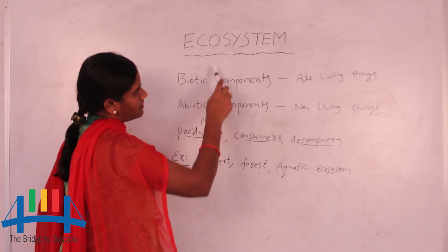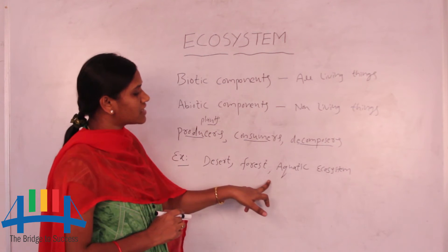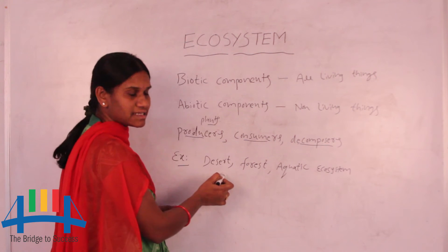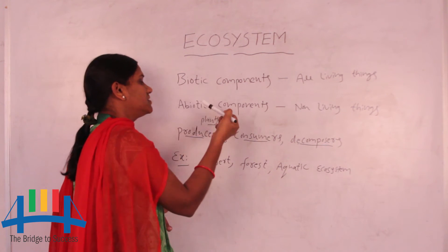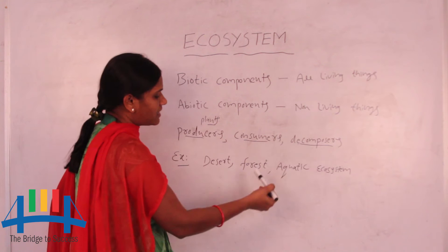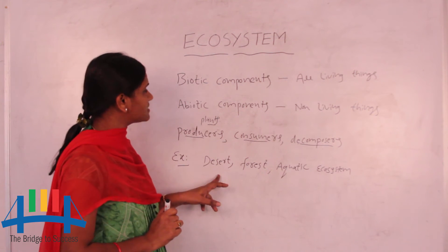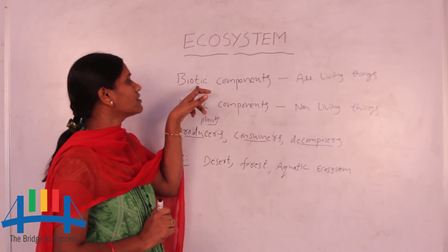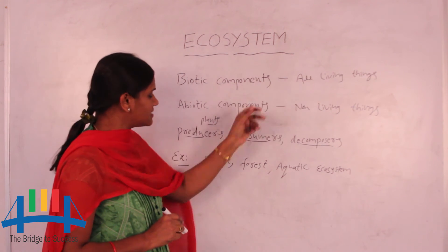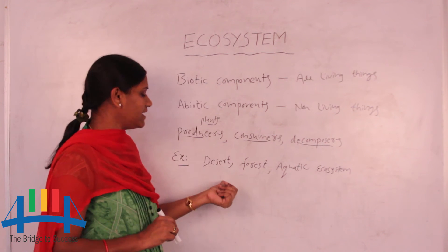Next, some examples of ecosystems: desert, forest, and aquatic. First, we take the desert ecosystem — which are biotic and which are abiotic components. In the desert ecosystem, we look at which animals and which plants are present. Those are called the biotic components in the desert.